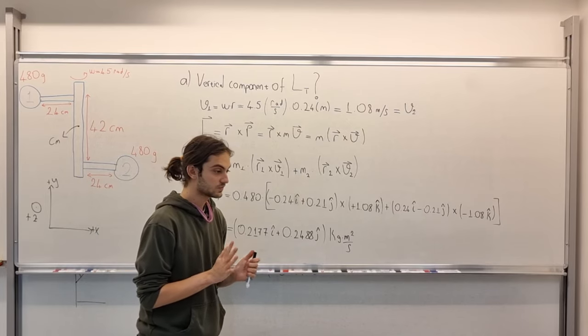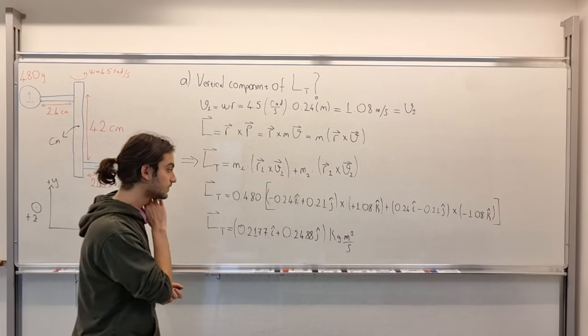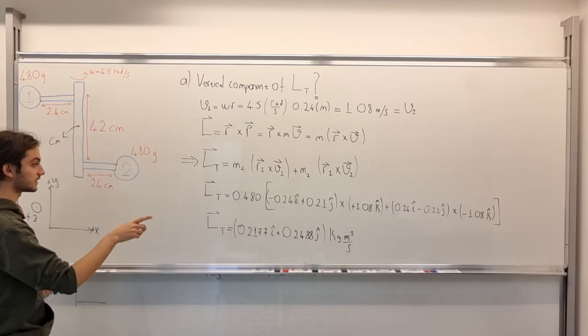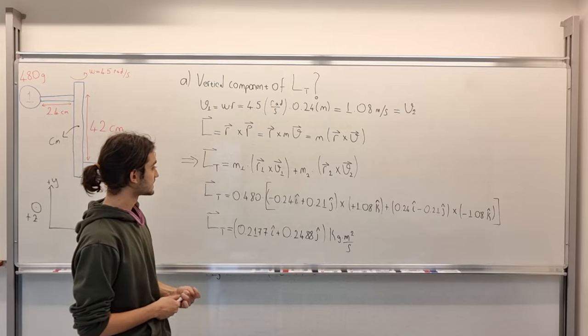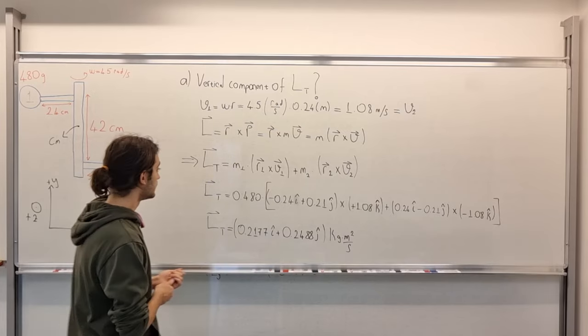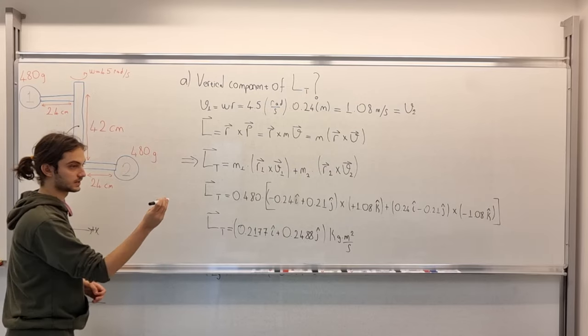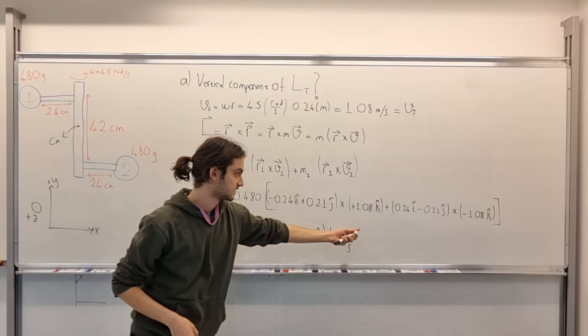Now, what is V1? We are using this vector sign. The vector sign, we need to, we can agree on that, that the vector here is k, but it is what? It is plus k. Why? So, we define plus k to be outwards from the board, right? And our object is this, so if this axis is turning like this, spinning like this, it has to come out of the surface. So, it is plus k.